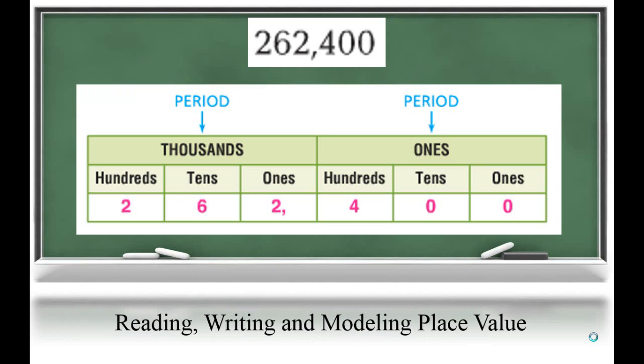When learning place value, students will learn to read, write, and model numbers through 1 million. Now, the basis of our base 10 system is that as we move to the left, the value of the digit increases.